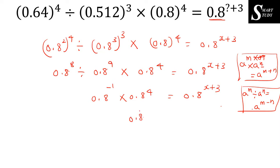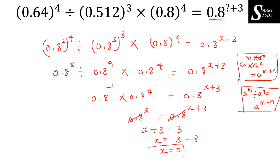Applying the laws of exponents: 0.8 to the power 8 divided by 0.8 to the power 9 gives 0.8 to the power minus 1. Then minus 1 plus 4 is 3, so 0.8 to the power 3 equals 0.8 to the power x plus 3. Cancelling the bases: x plus 3 equals 3, so x equals 0 is the answer. Only two steps are required in the exam.